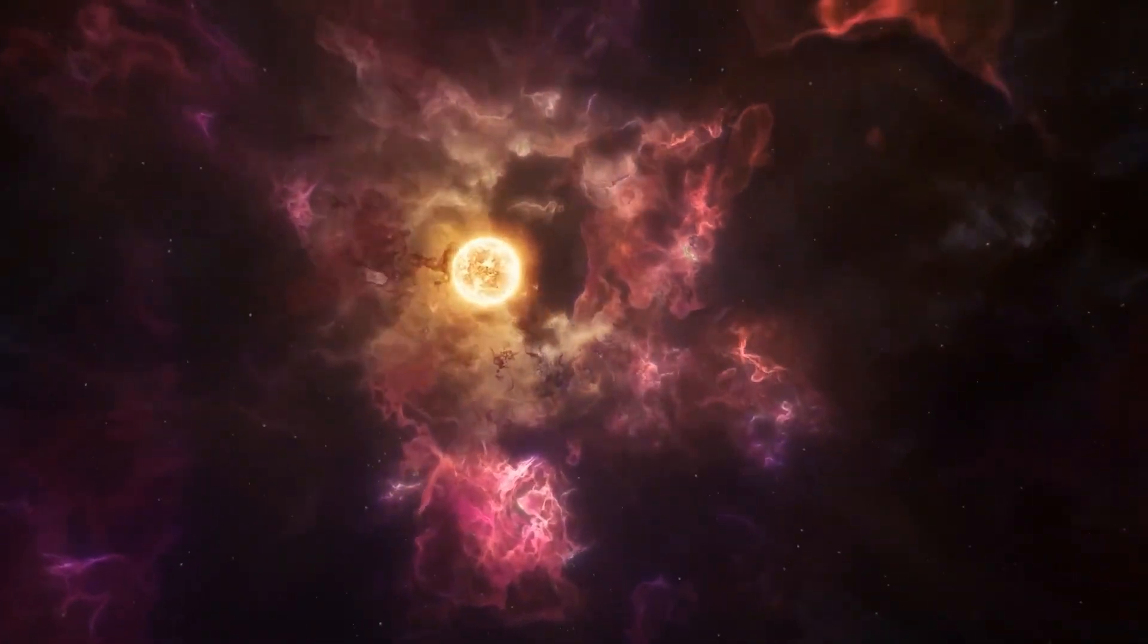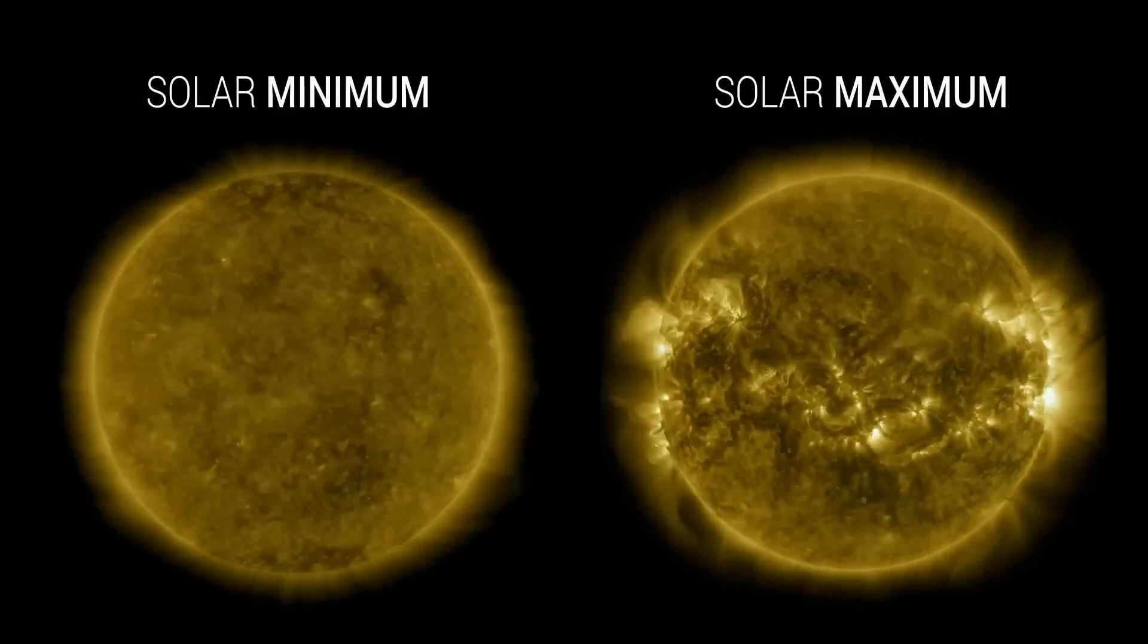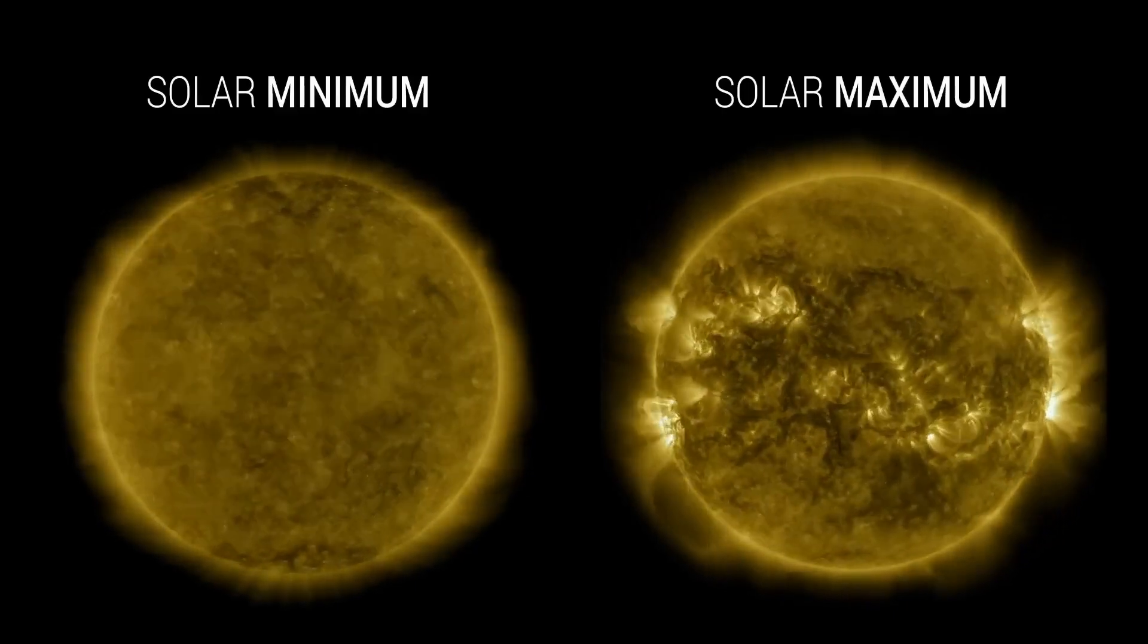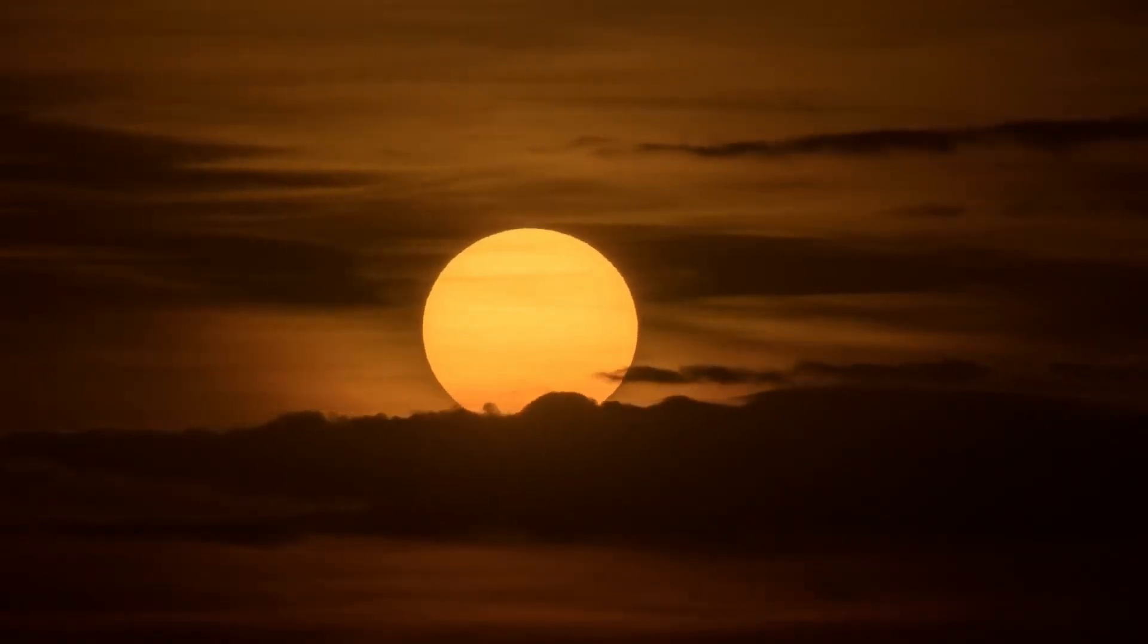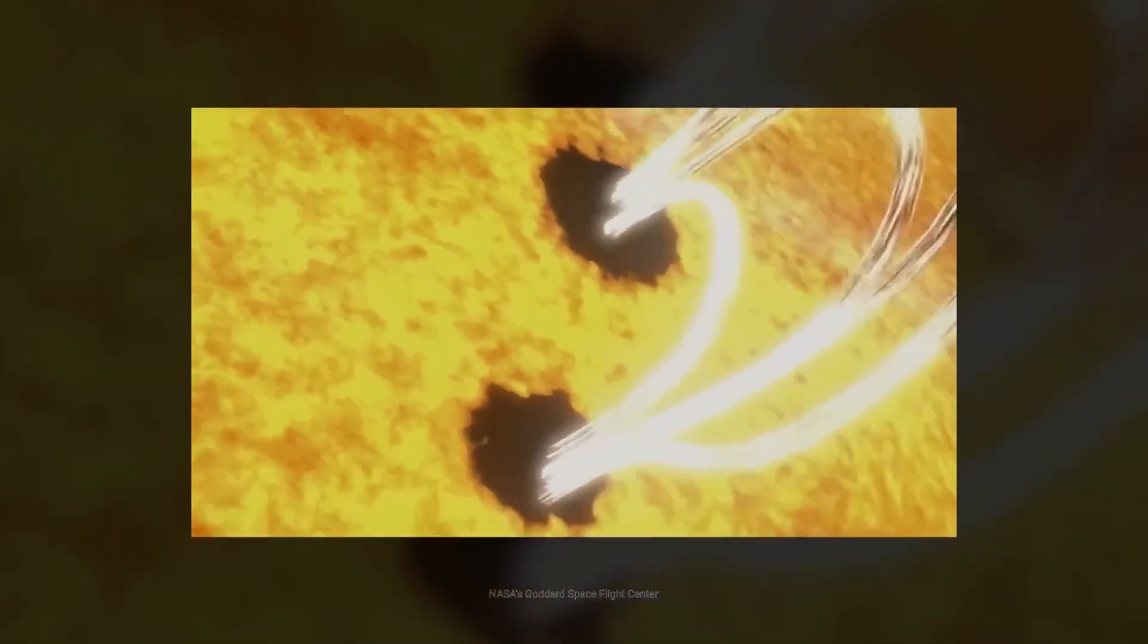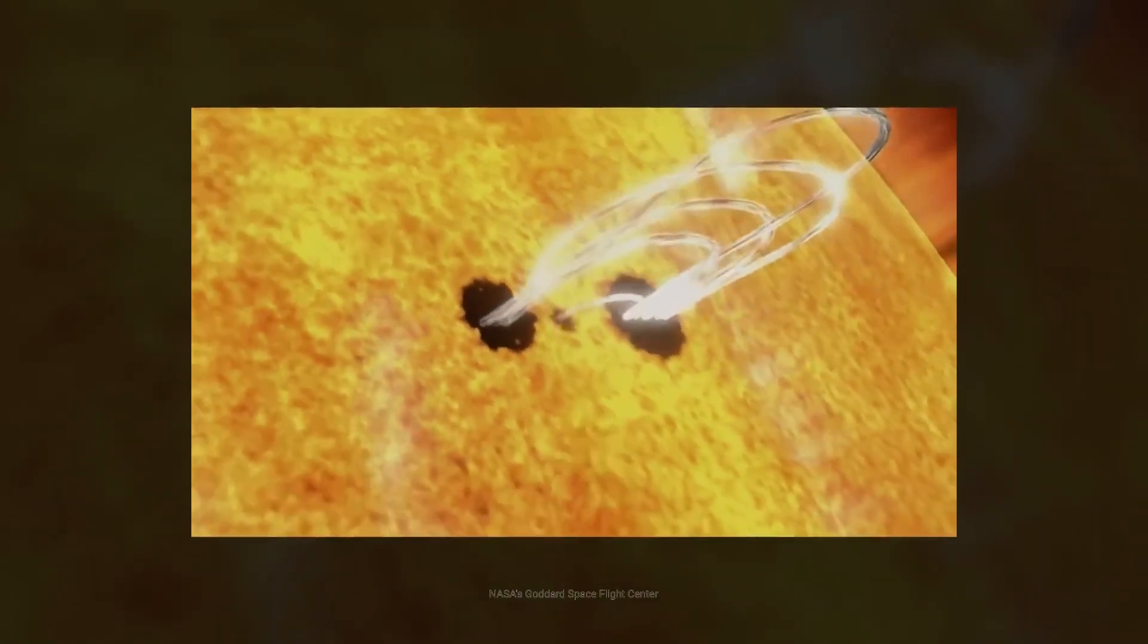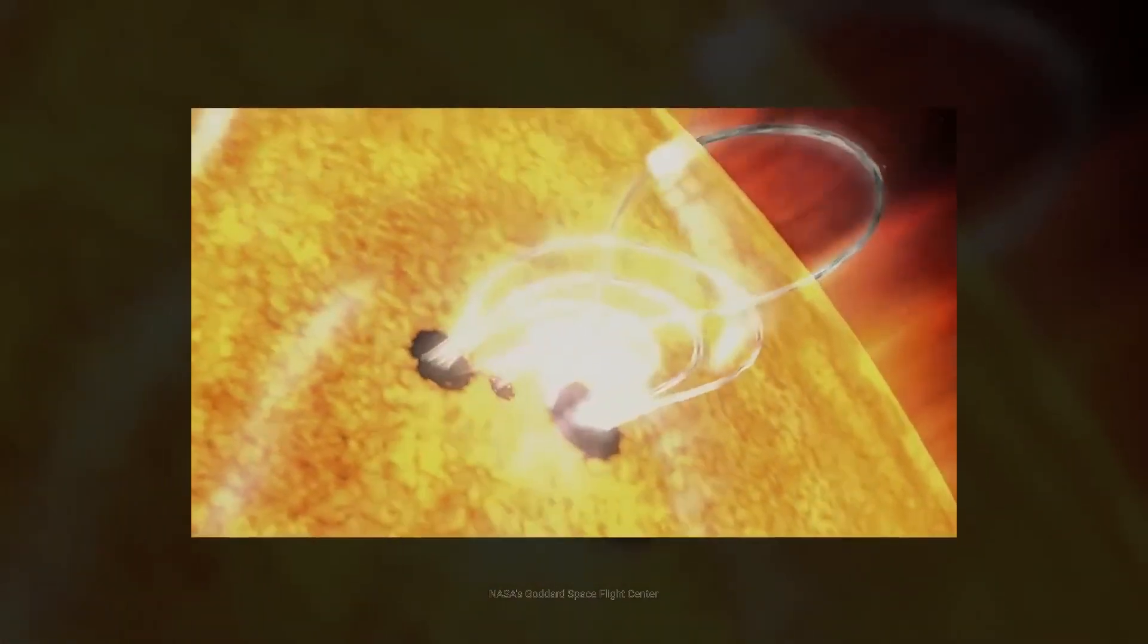But each of the preceding 24 cycles had unique characteristics. While most followed the expected pattern of rising to a maximum with many sunspots and then declining into a quiet minimum, there were two strange periods in history that we still can't explain.